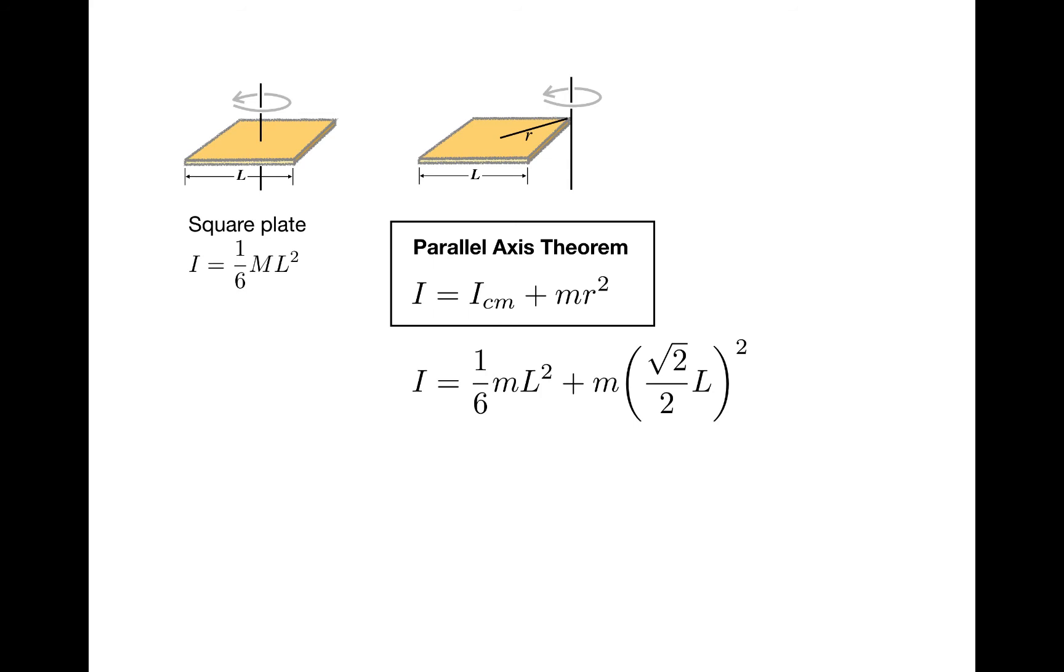I have one-sixth ml squared plus m times the quantity root 2 over 2 l all squared. Root 2 over 2 squared is just a half, and a sixth plus a half is two-thirds. And so the final formula is very nice, two-thirds ml squared.